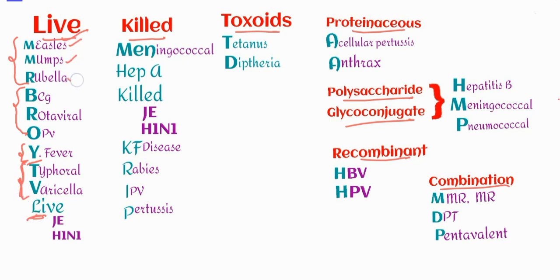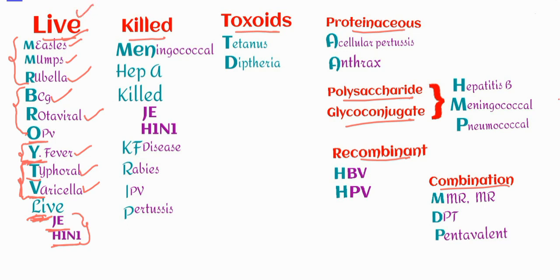So MMR here indicates measles, mumps, rubella, and then 'bro' stands for BCG, rotaviral, and oral polio vaccine (Sabin vaccine). Then 'Y' indicates yellow fever, 'T' indicates typhoral, 'V' indicates varicella, and 'live' here indicates Japanese encephalitis and H1N1. Whenever 'live' or 'killed' is mentioned in the mnemonic, it indicates Japanese encephalitis and H1N1, because these vaccines can be administered as both live and killed vaccines.